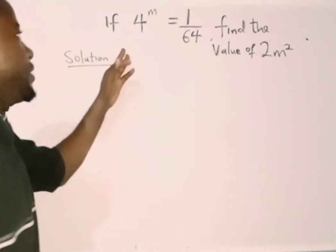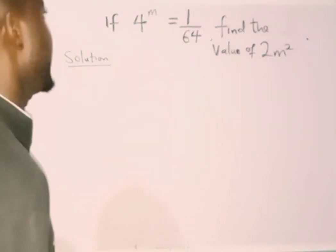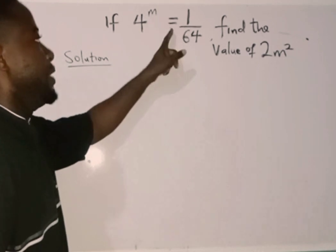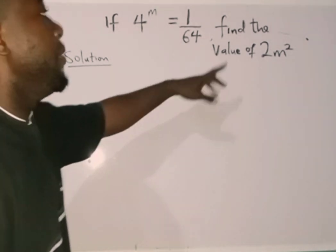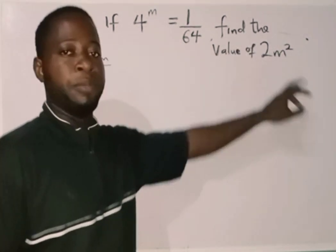In today's tutorial, we have a question on the board. The question says, if 4 raised to power m equals 1 over 64, find the value of 2m squared.